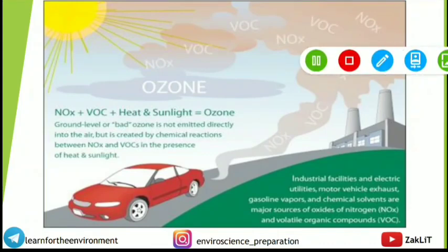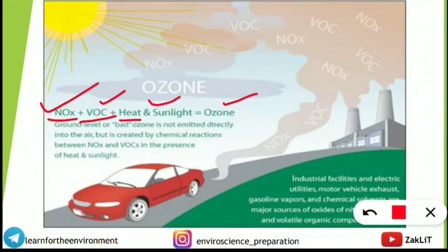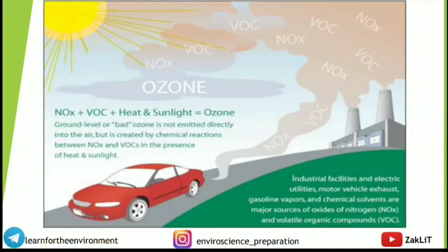Ozone is formed from oxides of nitrogen, volatile organic compounds, heat, and sunlight through a chemical reaction — this is tropospheric ozone. These precursors are emitted from industries and motor vehicles. You should know that ozone is a secondary pollutant made from these primary pollutants.